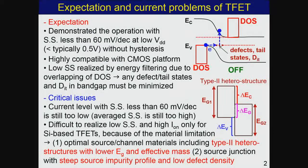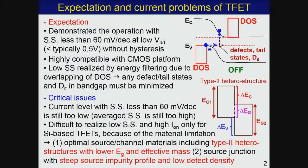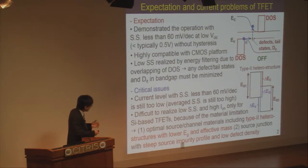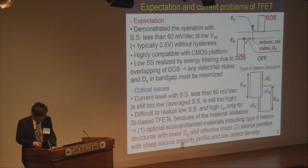Our concern is the optimal choice of source and channel materials, including type-2 heterostructures with appropriate band gap and effective mass. Source junction formation is also very critical — especially the PN junction type T-FET needs a quite steep source impurity profile to reduce the tunneling distance. Low defect density is also very critical, because steep impurity introduction can create extrinsic defects. Therefore, source engineering is one of the key issues to realize high-performance T-FET.